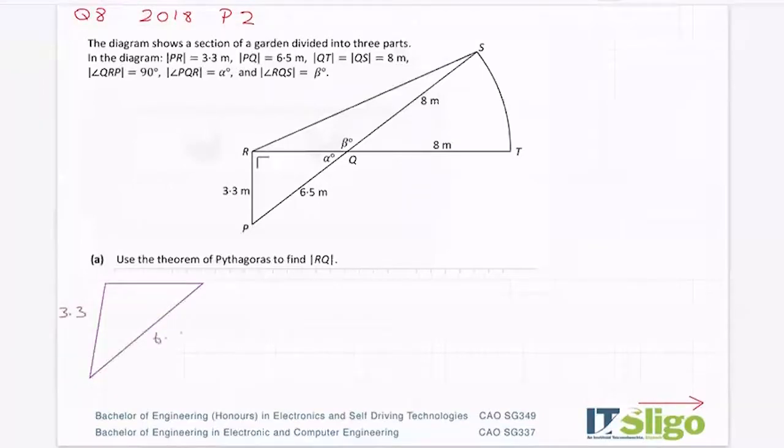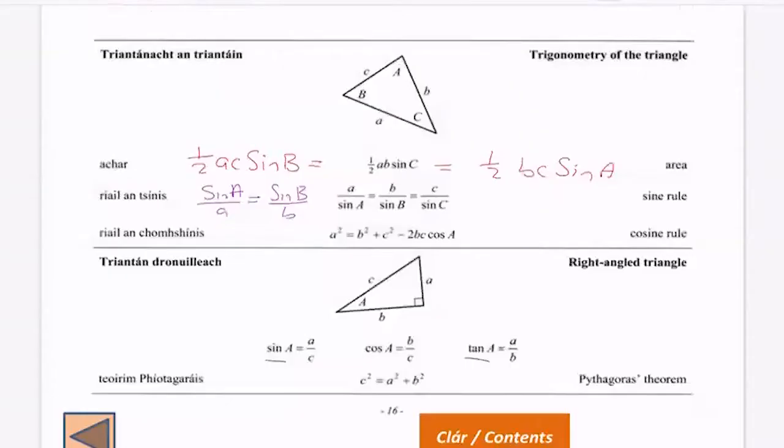So 3.3, 6.5, there's my right angle. I put an F into it, and there's my X. Okay, so Pythagoras' theorem from the log tables: C squared is equal to A squared plus B squared.